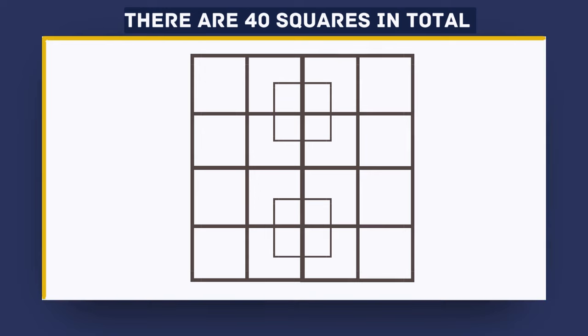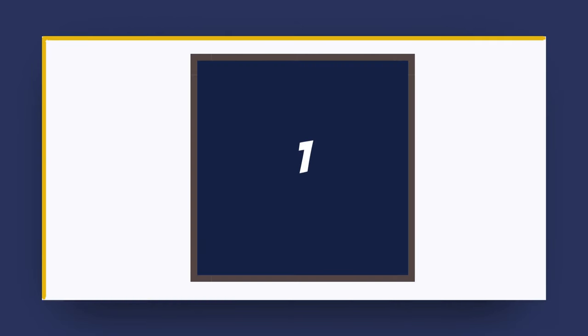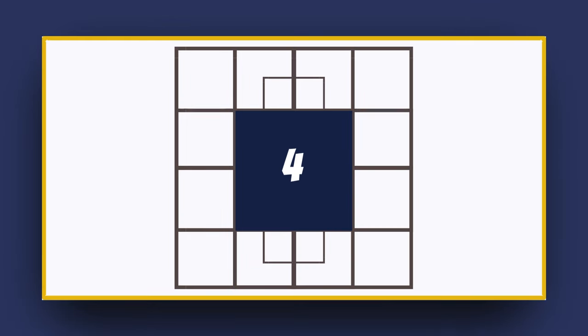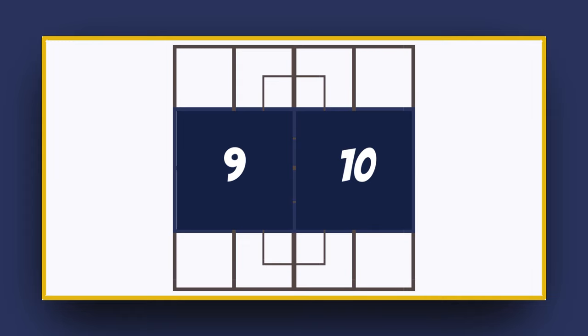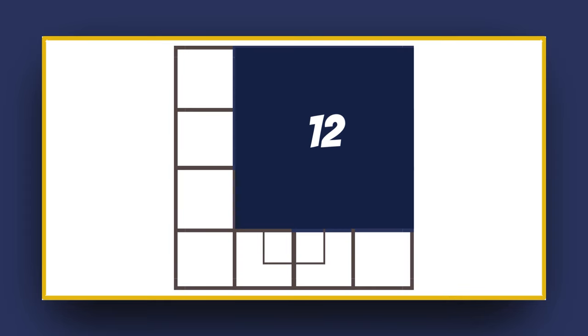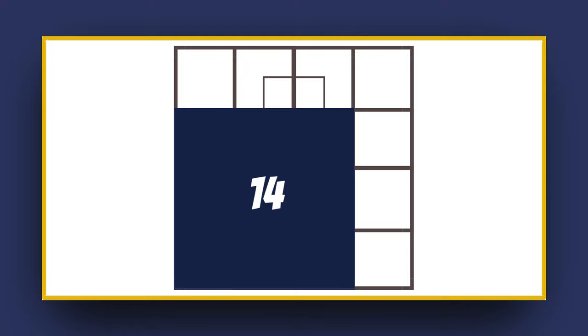There are 40 squares in total. If you failed this test, that's okay. 95% of people find it challenging locating all the squares, especially whilst being timed.